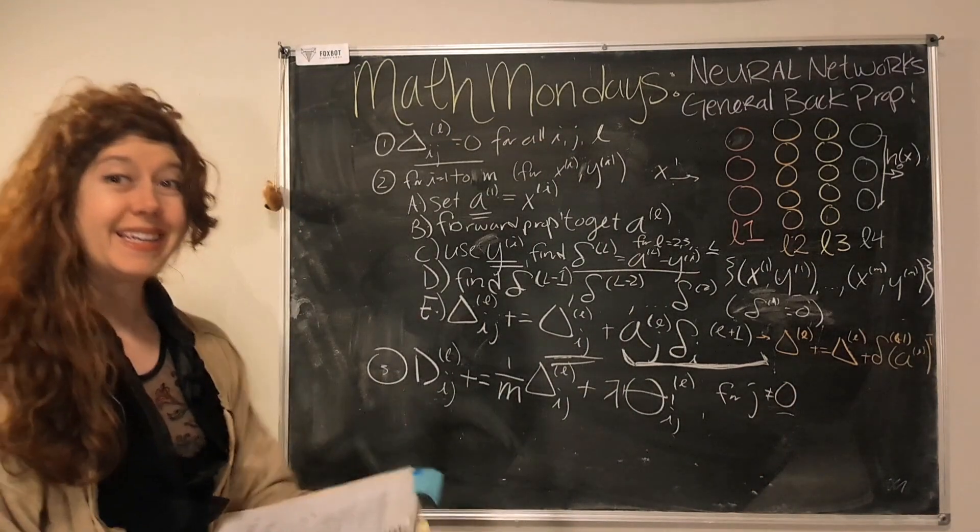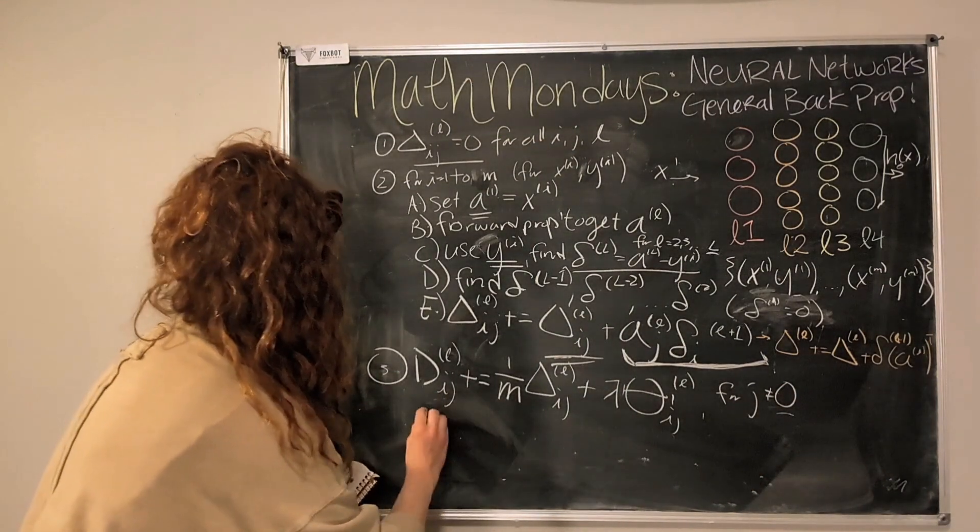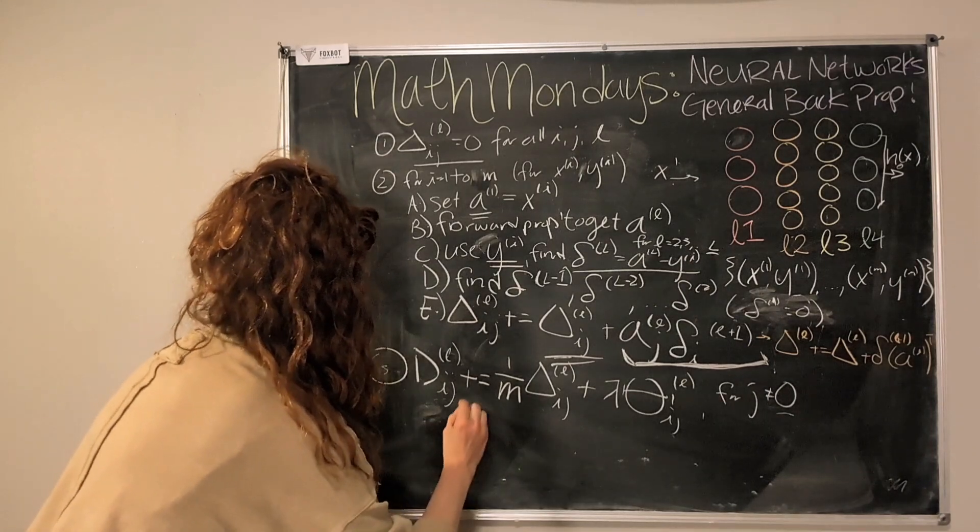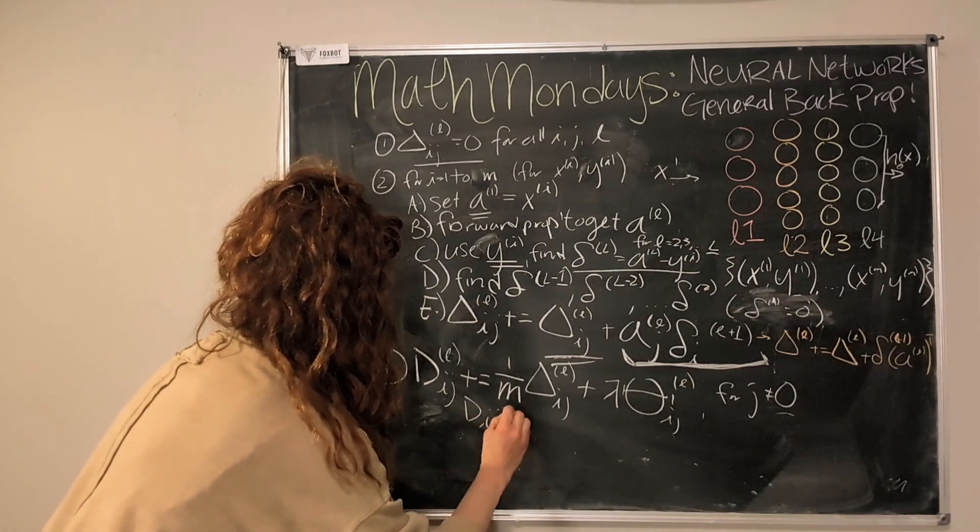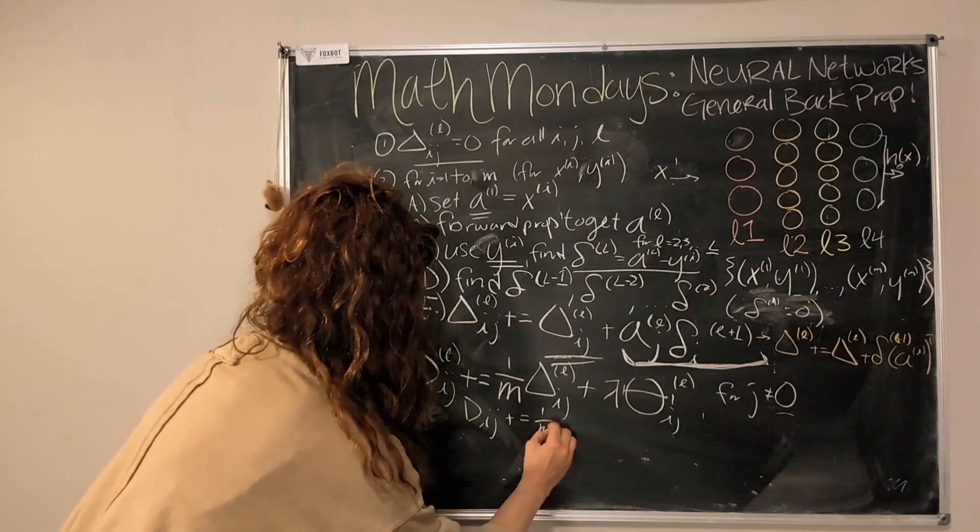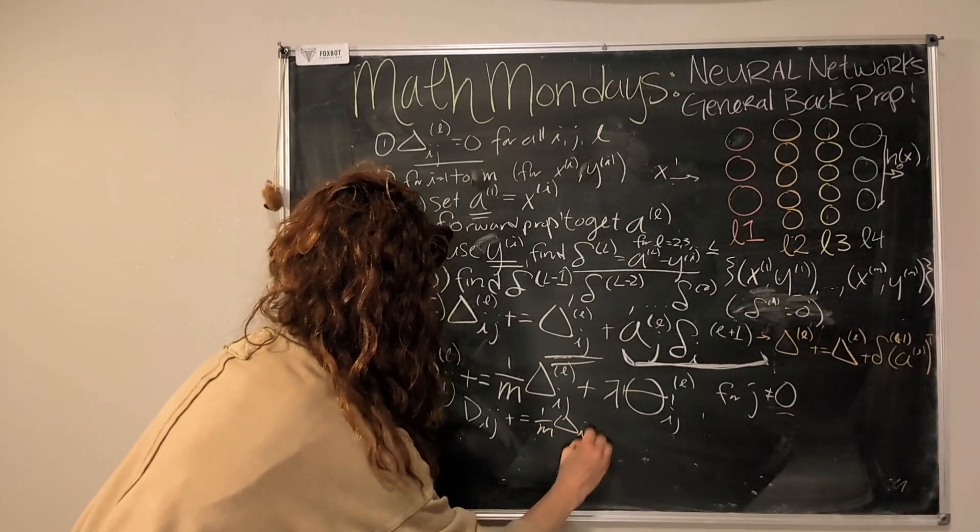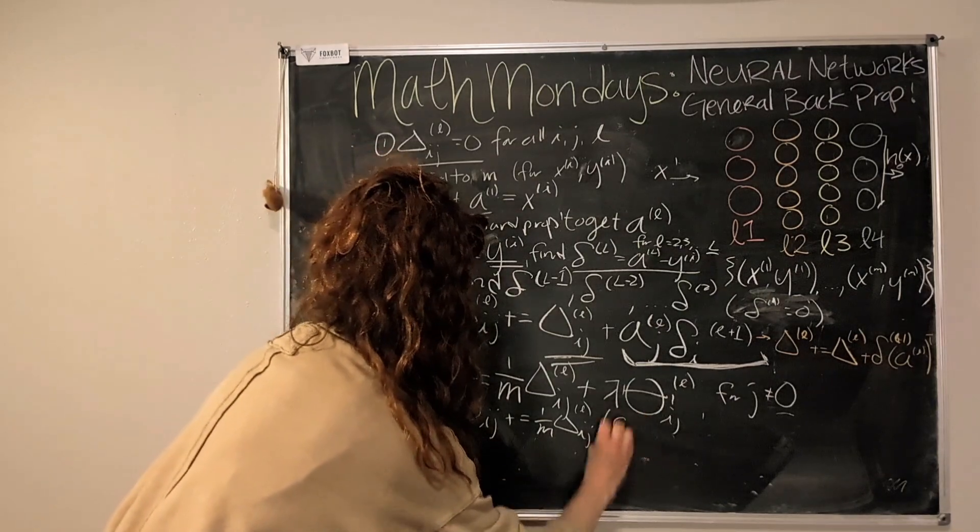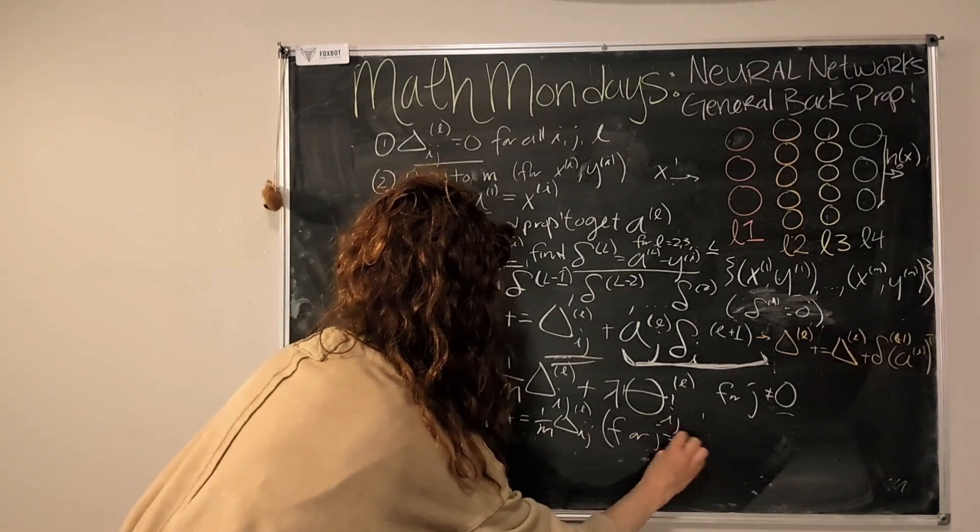And this is for when j is not zero. And if j is zero, then D_ij plus equals 1 over m delta for the layer, for j equals 0. Okay, cool, last step.